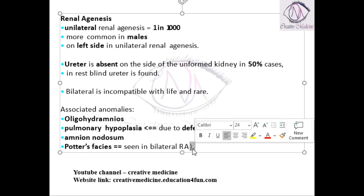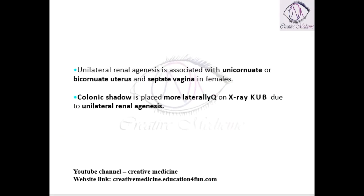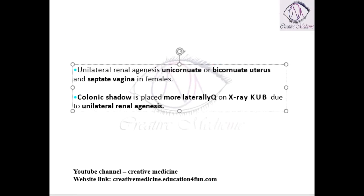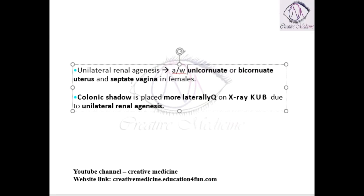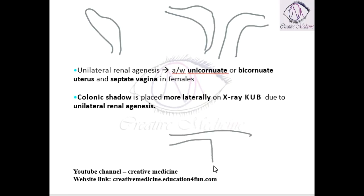Amnion nodosum is a feature seen due to oligohydramnios. Unilateral renal agenesis is mainly associated with a unicornuate, bicornuate, or cornuate uterus, or a septate vagina in females.